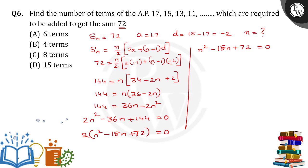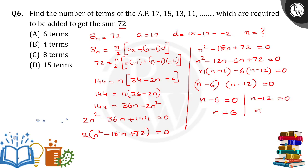To factor, in place of minus 18n, write minus 6n minus 12n plus 72. This gives n into n minus 12 minus 6 into n minus 12 equals 0. So n minus 6 into n minus 12 equals 0, where n minus 6 equals 0 gives n equals 6, or n minus 12 equals 0 gives n equals 12.